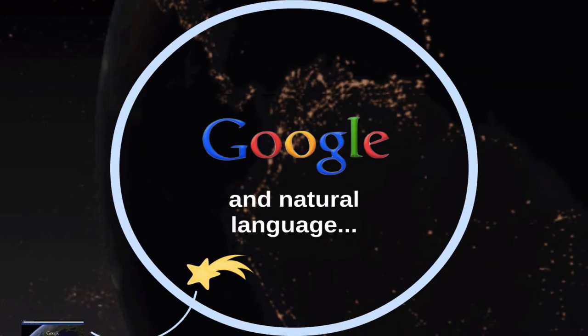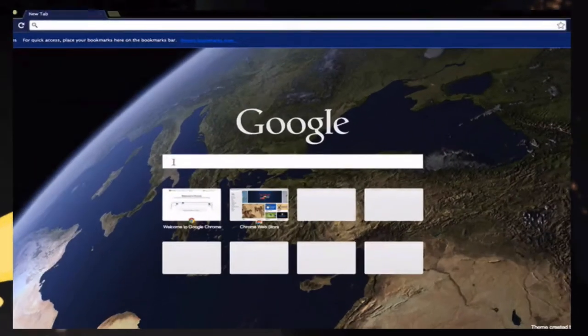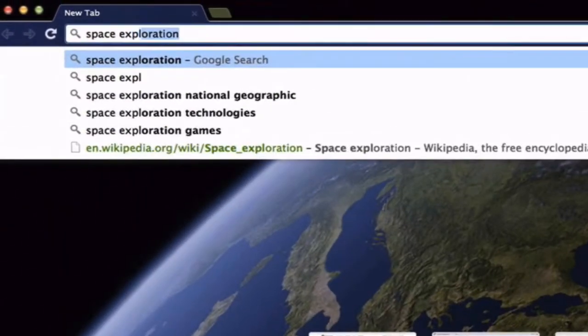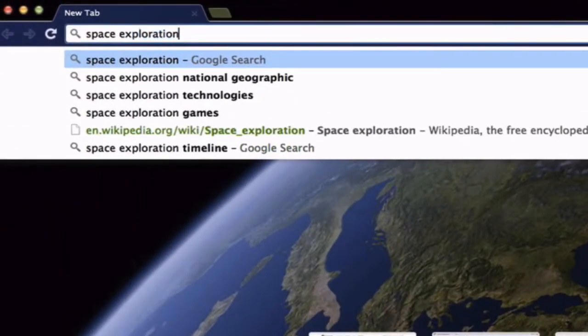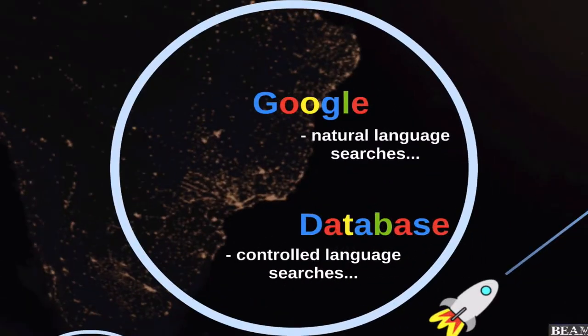When we Google something, our search terms reflect natural language. In other words, we enter whatever language we naturally use to describe our topic or question, and Google fetches the results. So if I want information about space exploration, I might Google that exact phrase. But databases use language differently.